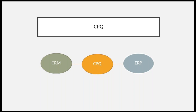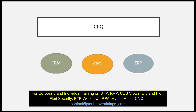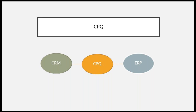SAP CPQ enables the sales team to sell faster and better by reducing the overall sales cycle timeline. With this easy-to-configure solution for complex products, businesses can go to market quickly.